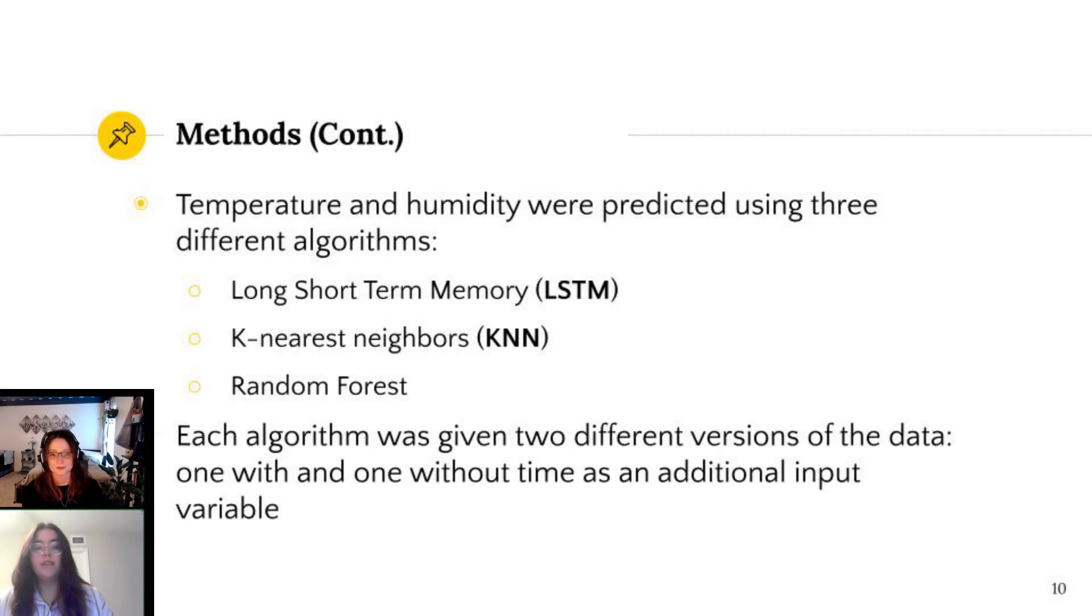Our goal was to compare the performance of different algorithms in predicting the future temperatures of the home. This is the first step towards creating an intelligent agent that is able to control the temperature and humidity of a home automatically before it reaches undesirable levels. We chose to compare one deep learning algorithm, long short-term memory or LSTM, and two traditional machine learning algorithms, k-nearest neighbors and random forest regression.